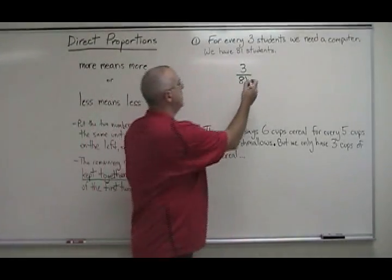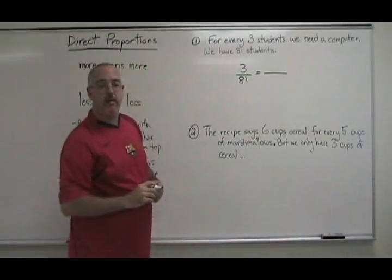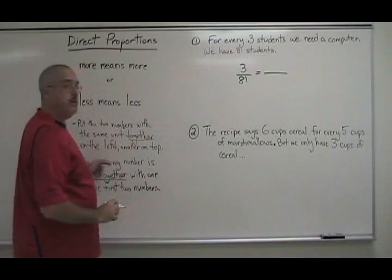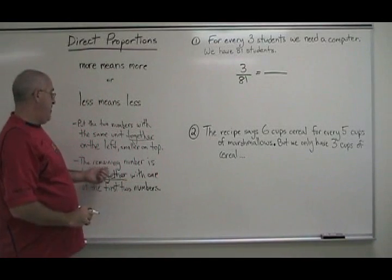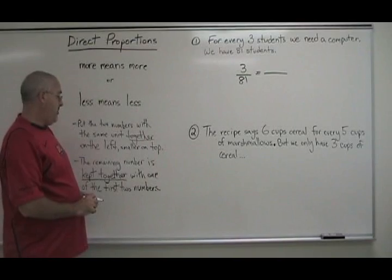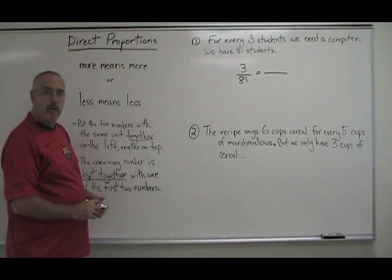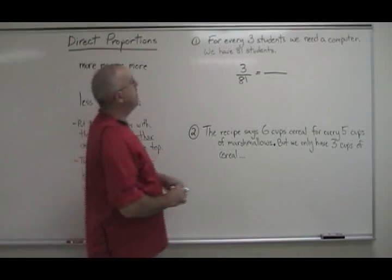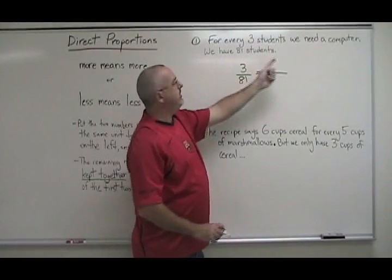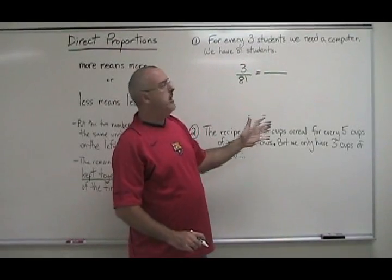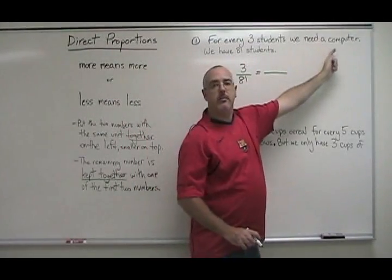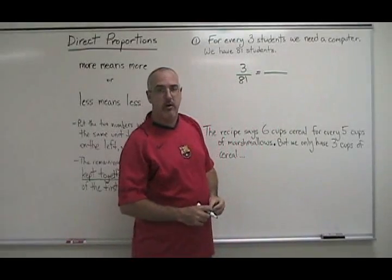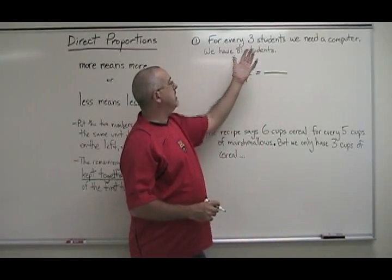Then we put an equal sign and we put a line for our other fraction. The next thing to do, the remaining number is kept together with one of the first two numbers. What does this mean? The remaining number in this problem is not noticeable at first, but you have to realize that a computer means one computer. So the other number besides the three and the 81 is one.